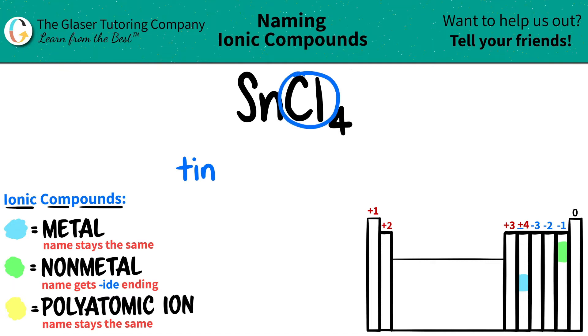Now the nonmetal, in this case, the chlorine, that name gets the I-D-E ending. So on the periodic table, it's chlorine, but when we name it, it has to turn into chloride. So I drop the I-N-E and I add the I-D-E.